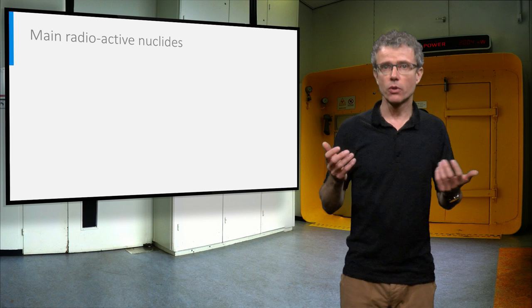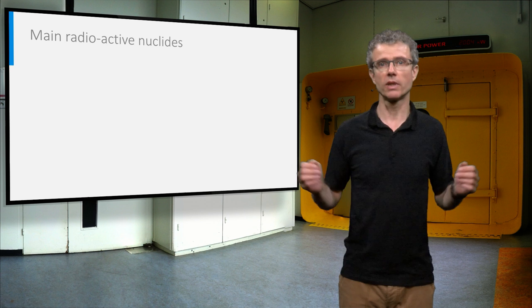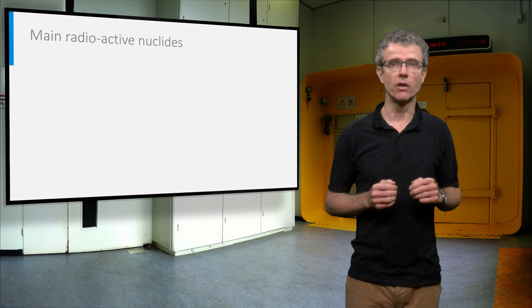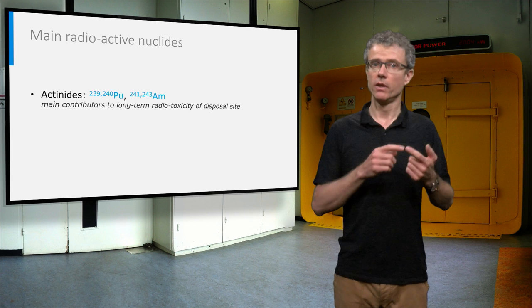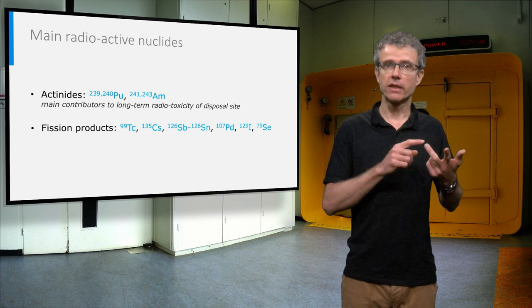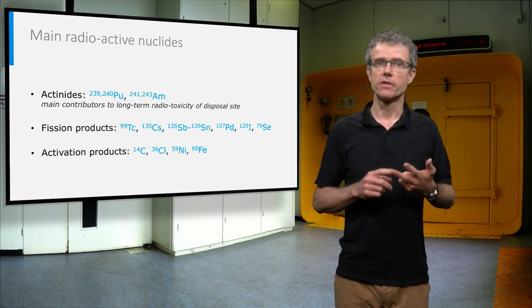In the long term, all short-lived radionuclides have decayed to stable nuclides, and only the long-lived radionuclides will remain. For spent nuclear fuel, the most important remaining radioactive nuclides, after 1000 years in the geological disposal site, are the actinides, such as plutonium-239 and plutonium-240, the fission products like technetium-99 and cesium-135, and activation products like carbon-14 and chlorine-36.